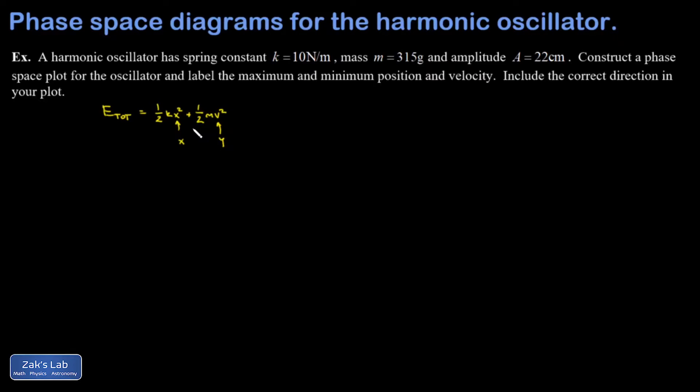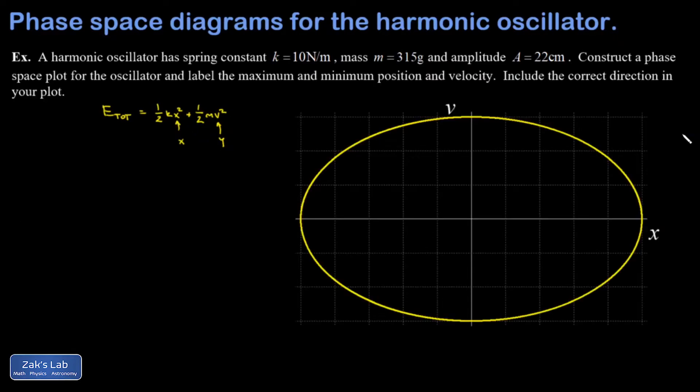Here's what the phase-space plot looks like. There it is, velocity versus position. To understand what we're looking at, it's helpful to label the maximum and minimum velocity and maximum and minimum position. We were given in the problem all the specs on this oscillator. The maximum and minimum position are probably the easiest things to pick out.